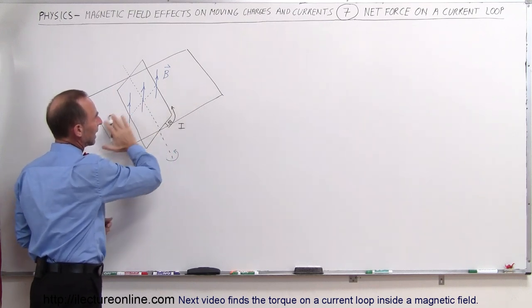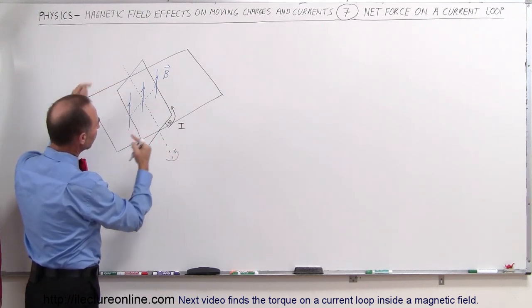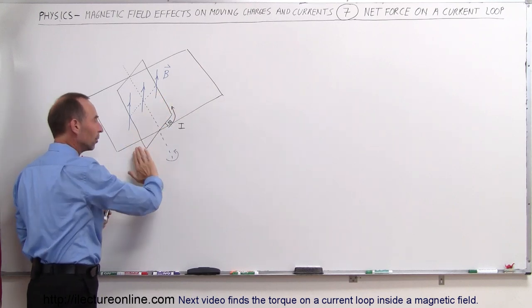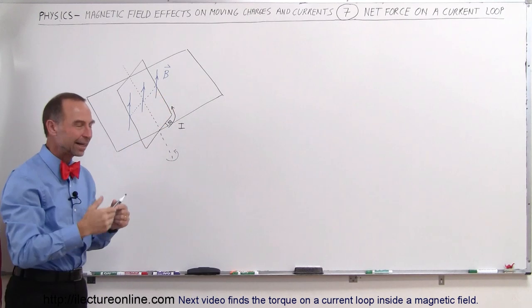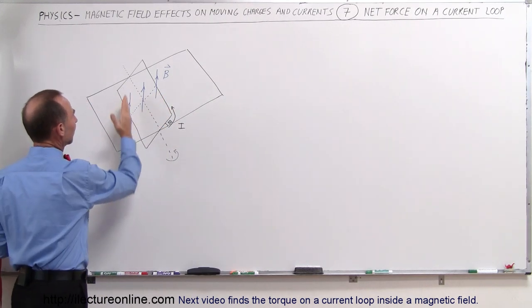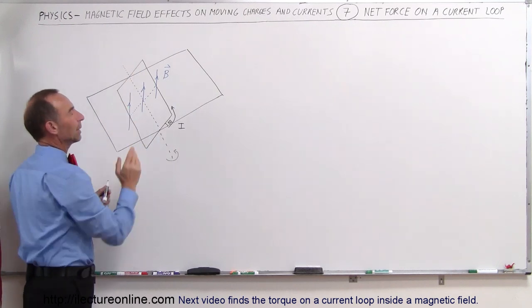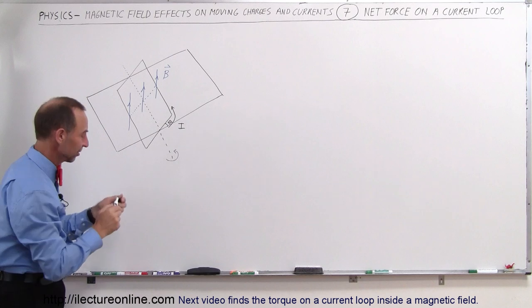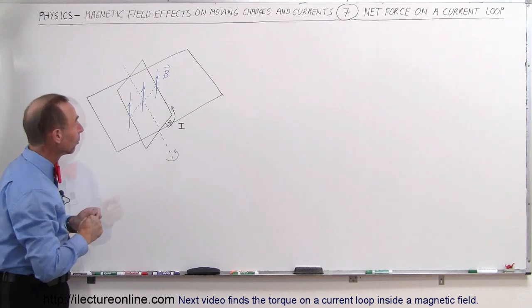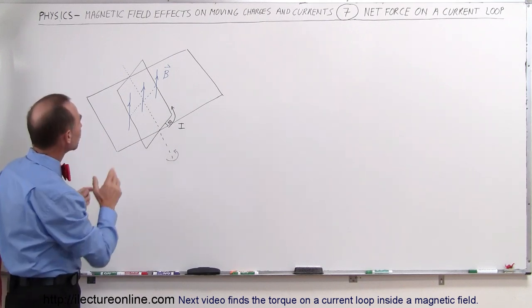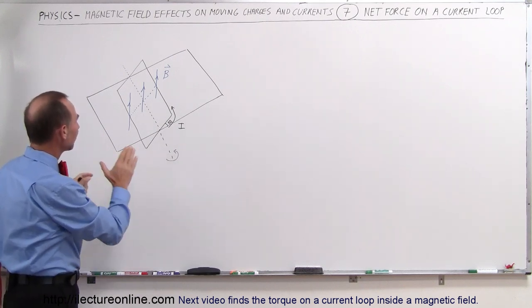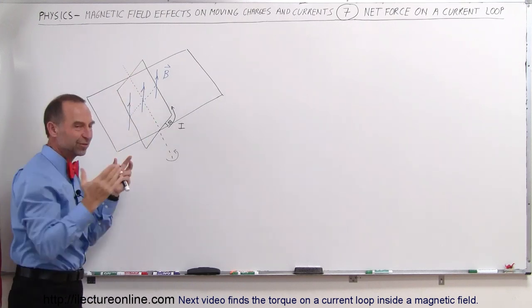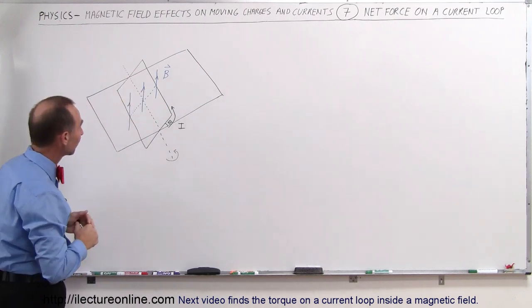This is the plane about which it's rotating. You can see that this portion of the loop is above the plane, and this portion of the loop is below the plane — that gives you some perspective. We have the B field directly out of the plane, perpendicular to the plane. What we're going to try and do here is establish the forces on the four sides of this loop.